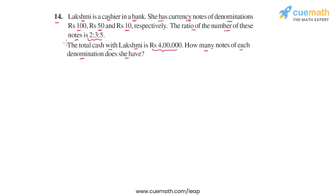So there are two important pieces of information. The number of notes of the three denominations are in the ratio 2:3:5, and the total value of these notes is rupees 4 lakhs. We can start by assuming the number of notes of each denomination in terms of some variable. Because the ratio is known — 2:3:5 — we can assume the number of notes to be 2x, 3x, and 5x.